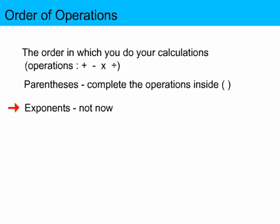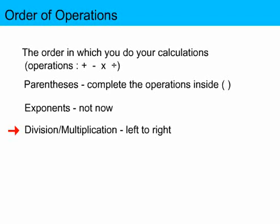Secondly, you do the exponents. And you will learn about exponents in a future year, so we can just leave that out for now. Third, you do division and multiplication, but you do it left to right. So if you've got one division and one multiplication, you do whichever one is on the left first. Division doesn't come before multiplication. It comes at the same time.